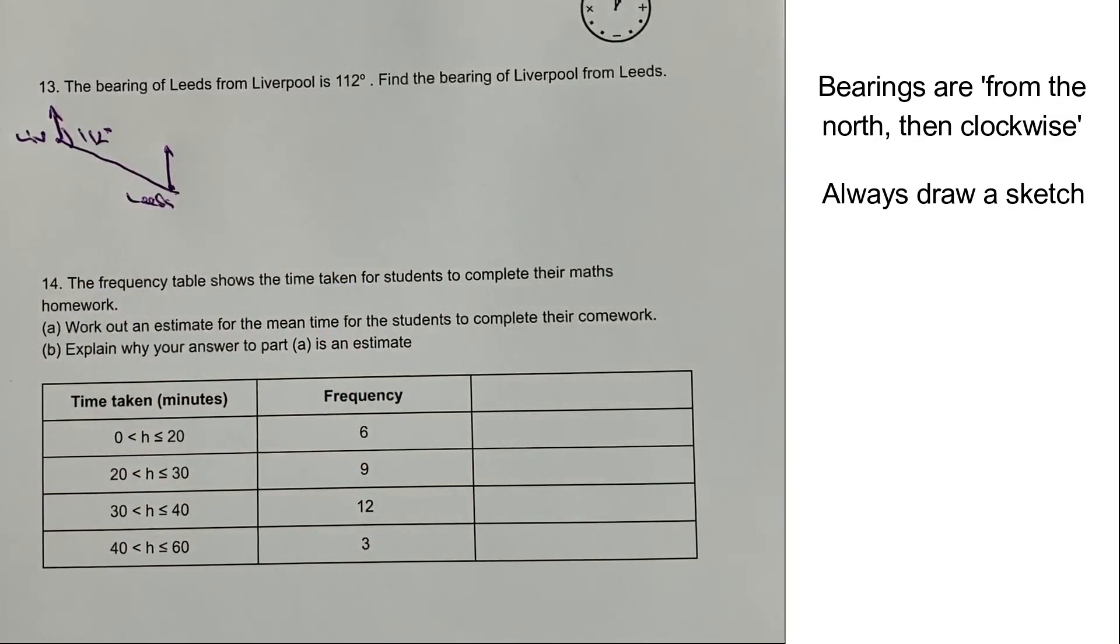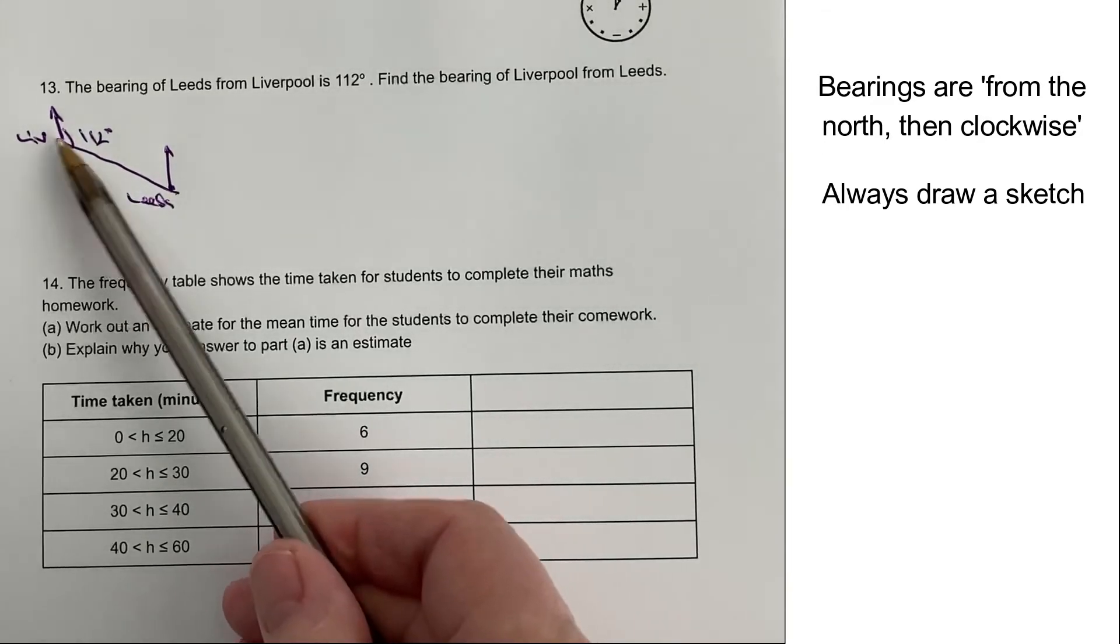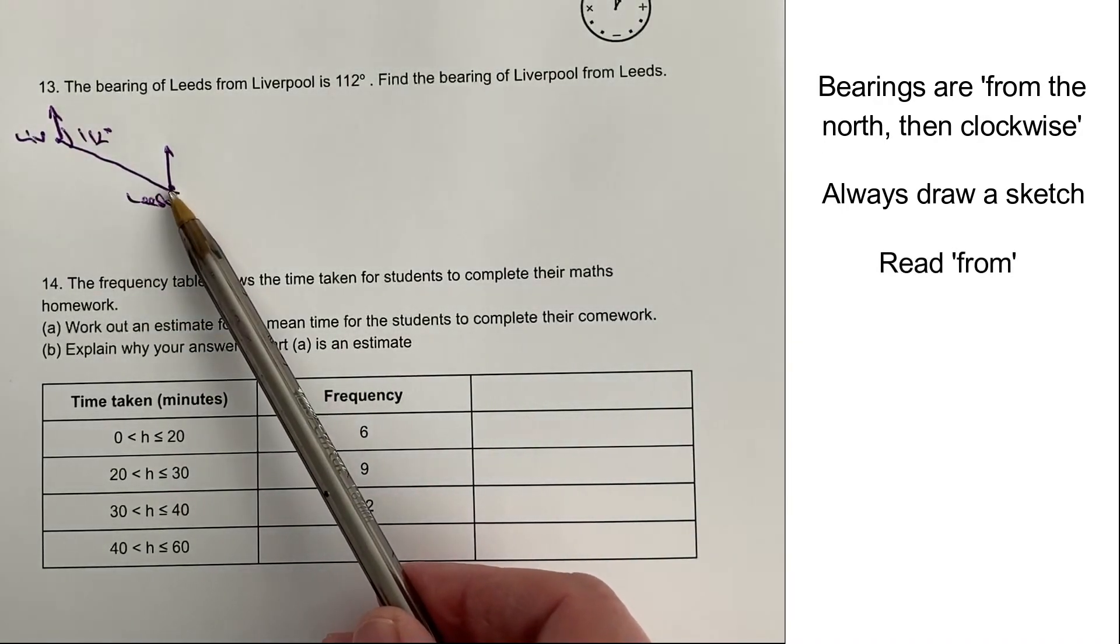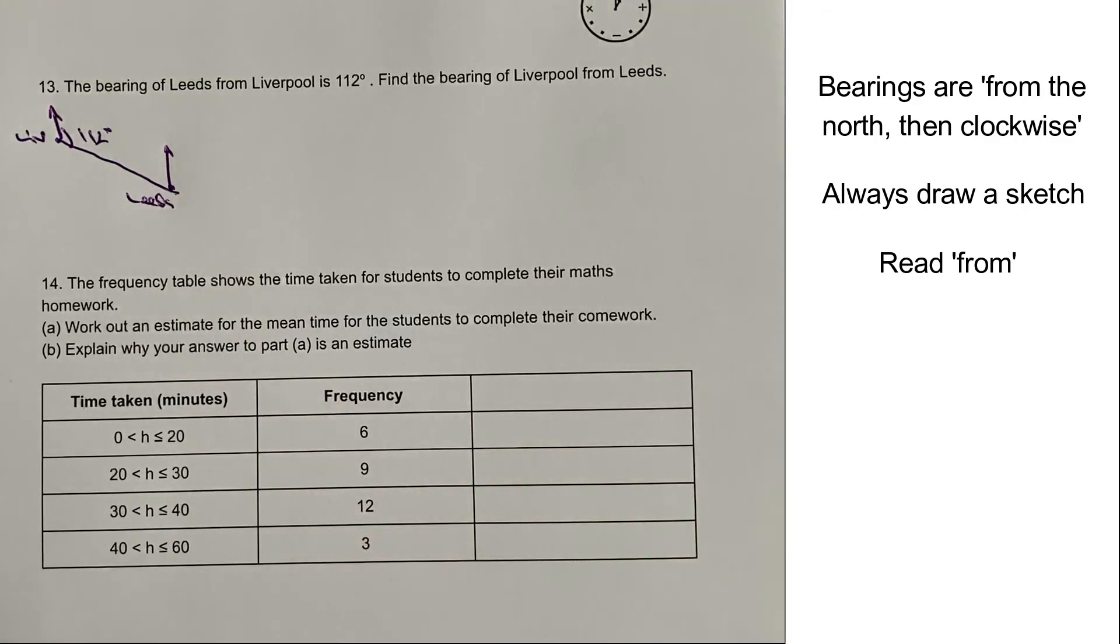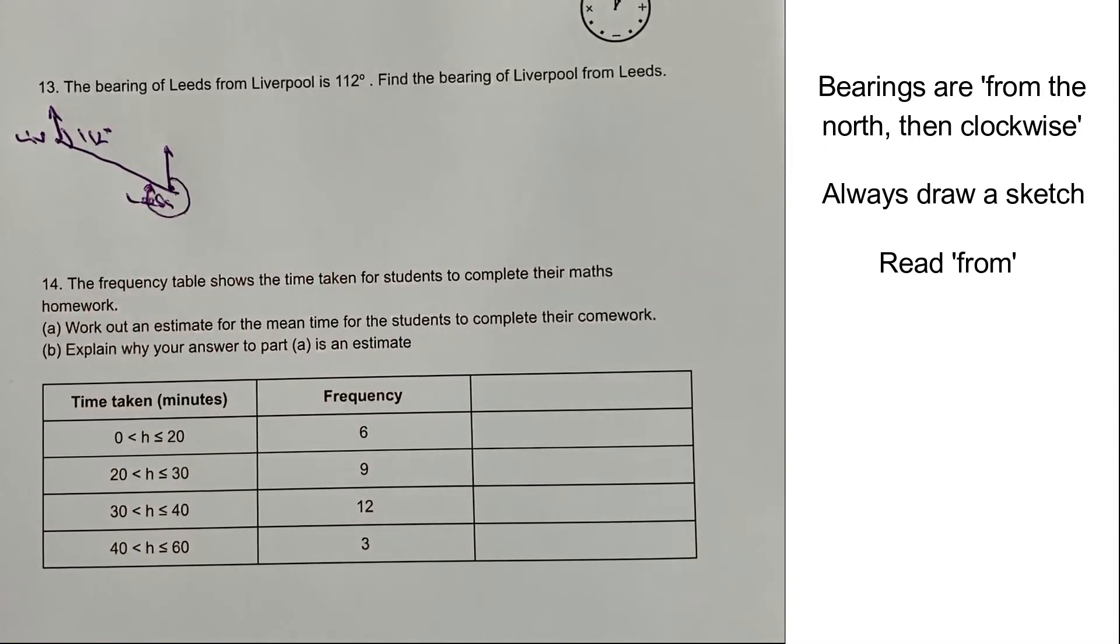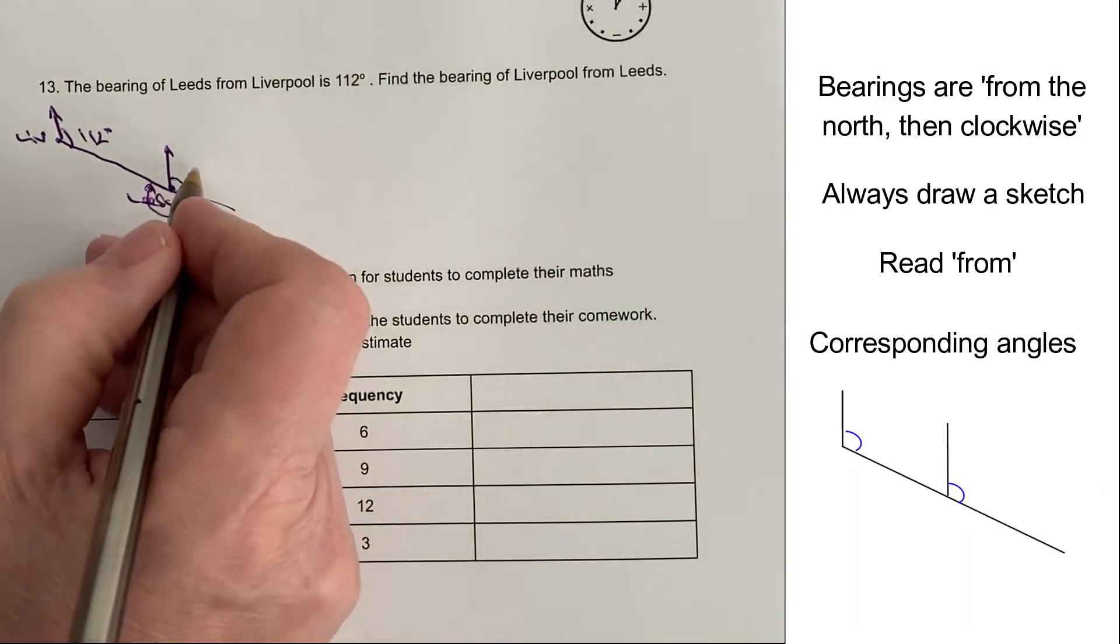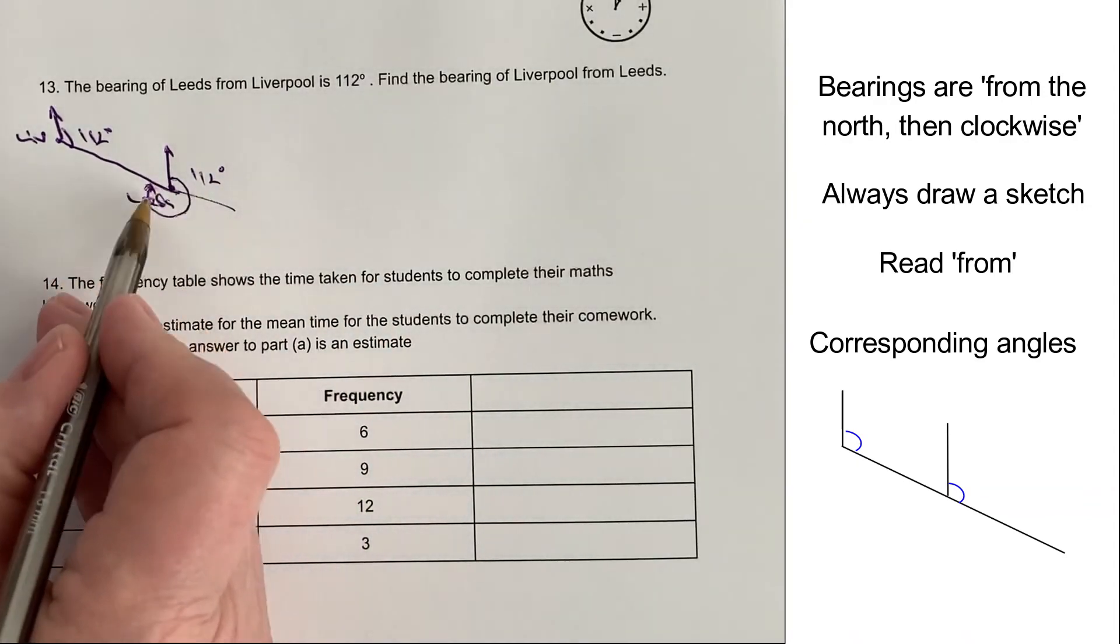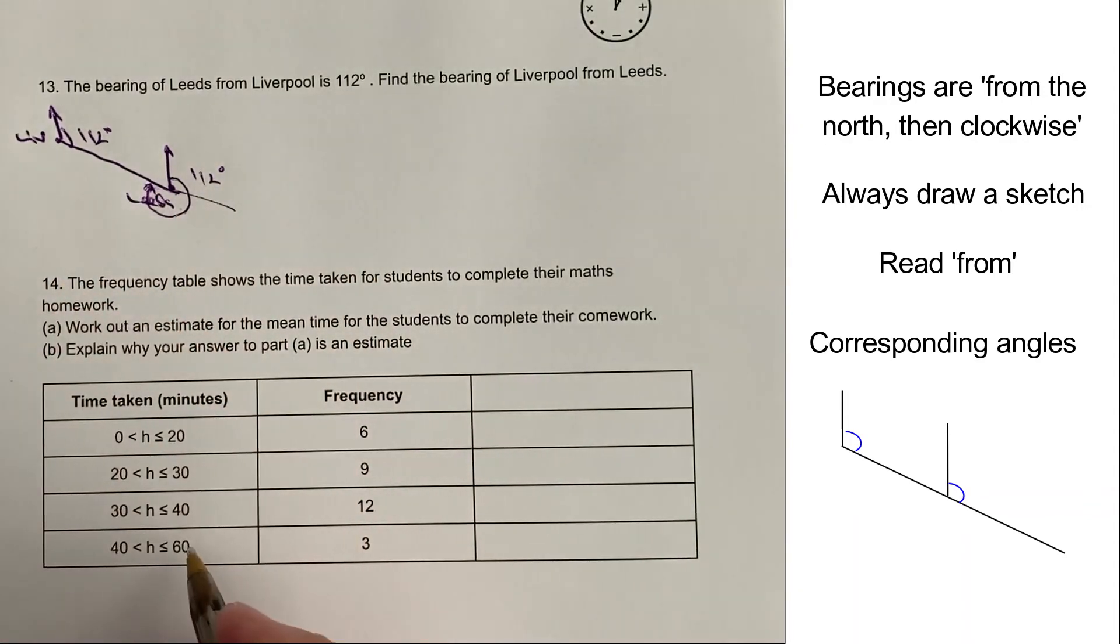And what we're saying then, or the question is, what's the bearing of Liverpool from Leeds? So in other words, if you're standing in the middle of Leeds, where would Liverpool be? Well, basically, it would be this bearing here, because all bearings are north clockwise. So the easiest way of doing this is by using corresponding angles, because effectively, this part of it is also 112 degrees. And then this is a straight line, which is 180.